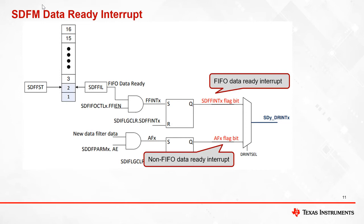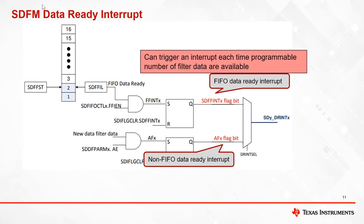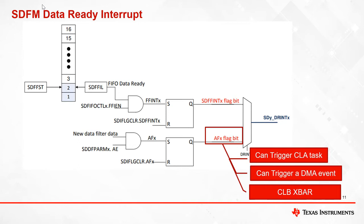SDFM data ready interrupts can be either non-FIFO data ready interrupts or FIFO data ready interrupts. Non-FIFO data ready interrupts are generated every time new filter data is available from the data filter channel. FIFO data ready interrupts are generated after the FIFO has received a programmable number of data filter results. Non-FIFO data ready interrupts can trigger a CLA task, DMA event, and are also connected to the CLB crossbar.